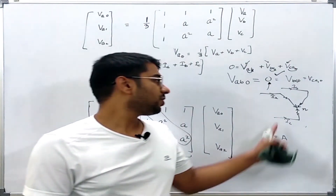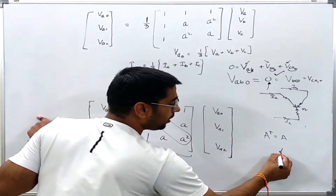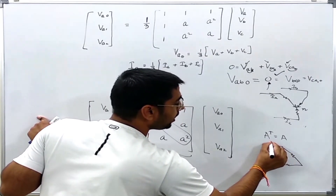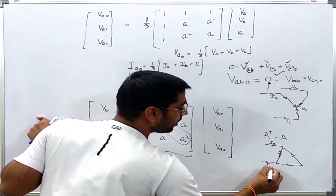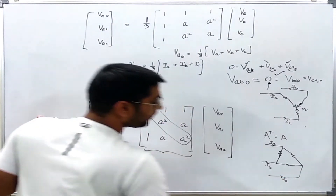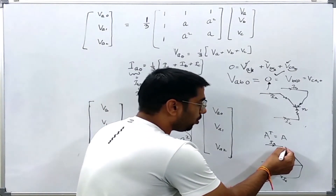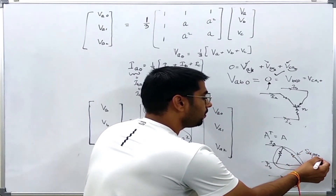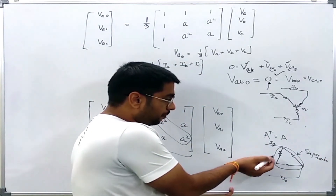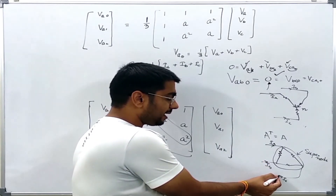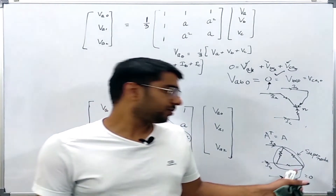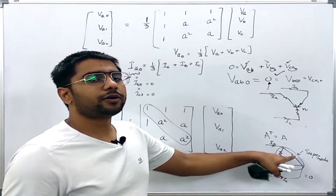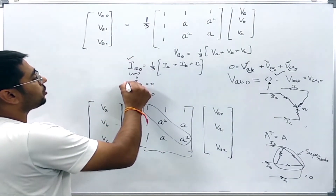For a delta-connected system, we can treat the entire delta load as a super node. From KCL applied to this super node, the sum of all currents entering must equal zero. This clearly shows that a delta connection does not provide a path for neutral currents. Therefore, whenever there is a delta-connected load or delta-connected system, the zero sequence component will always be equal to zero.